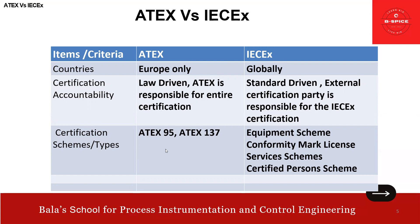For the certification schemes: ATEX has ATEX 95 and ATEX 137 — those are the two schemes. But for IEC EX, we have a wide variety: one is the equipment scheme, second is a conformity mark license, third is a service scheme, and fourth is a certified person scheme. These are all the available certifications under IEC EX.